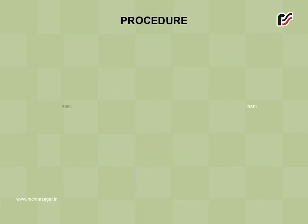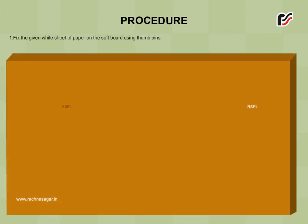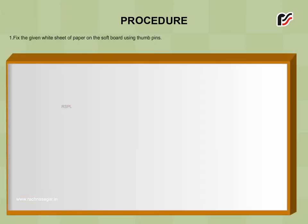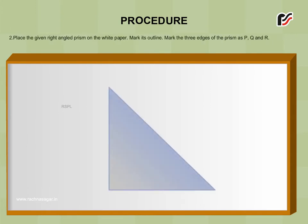Procedure: Fix the given white sheet of paper on the soft board using thumb pins. Place the given right-angled prism on the white paper. Mark its outline. Mark the three edges of the prism as P, Q, and R.